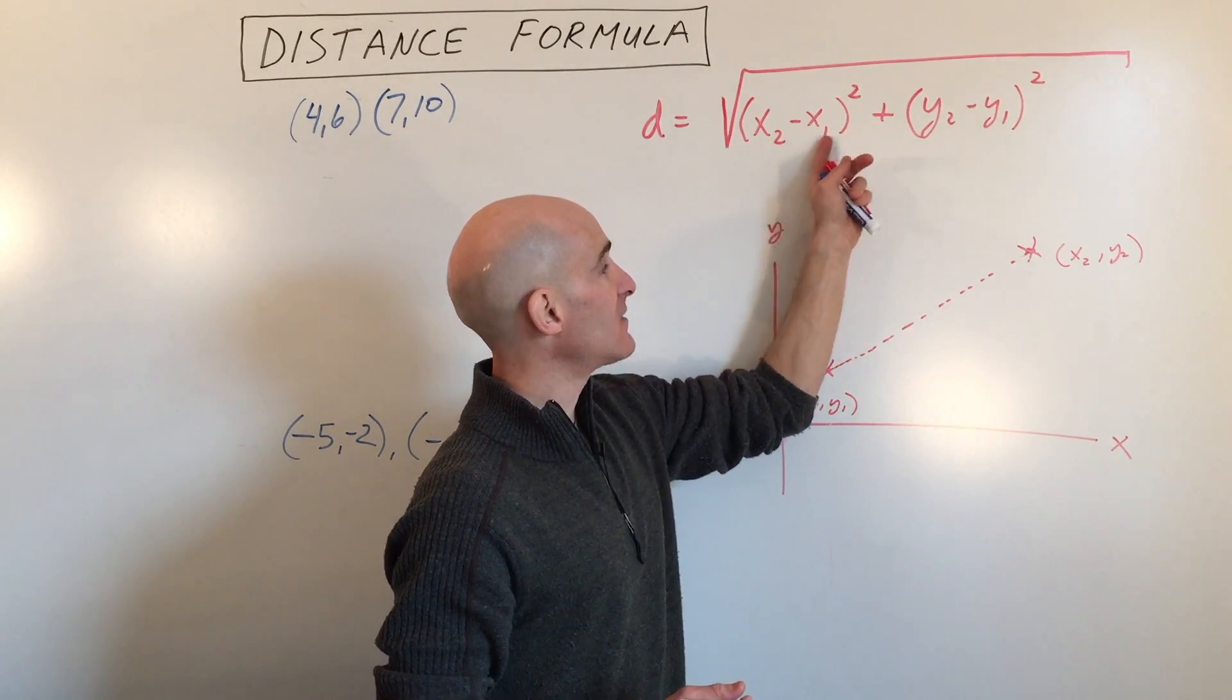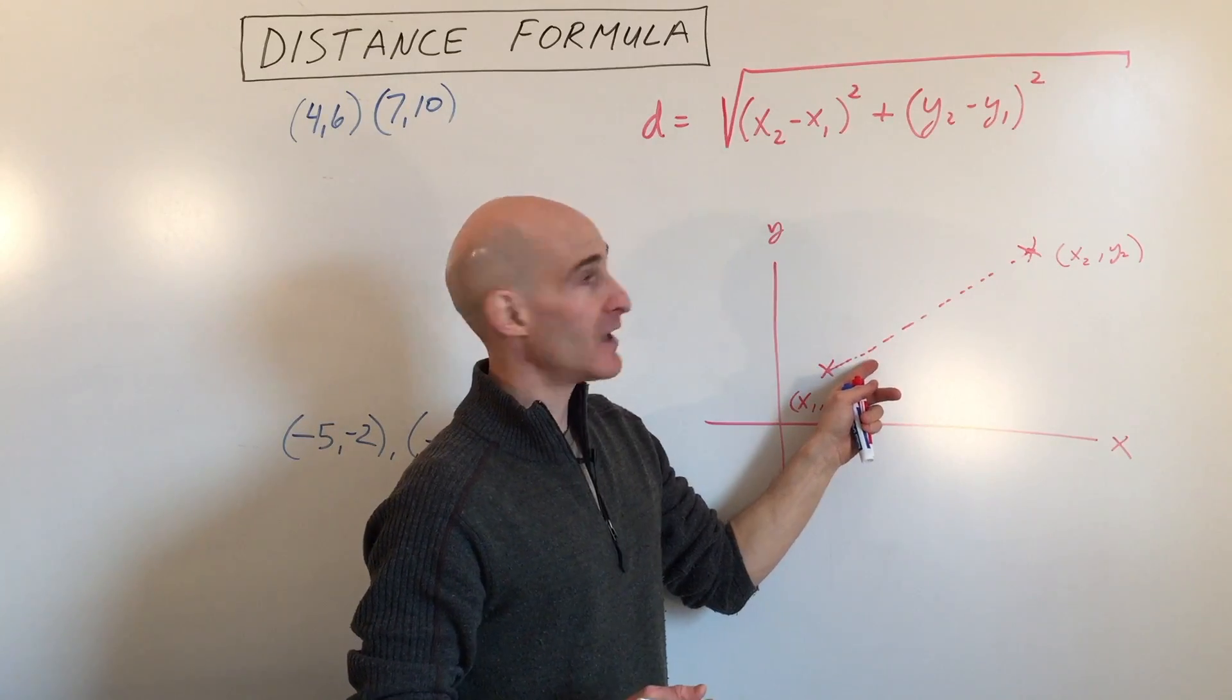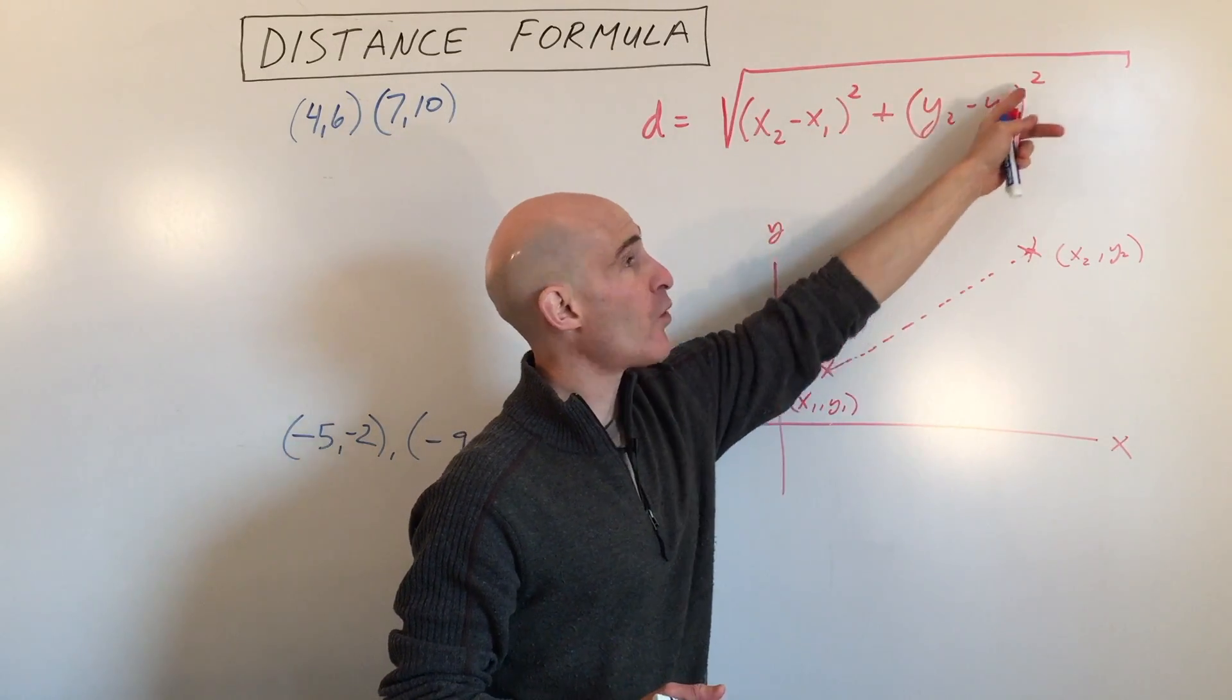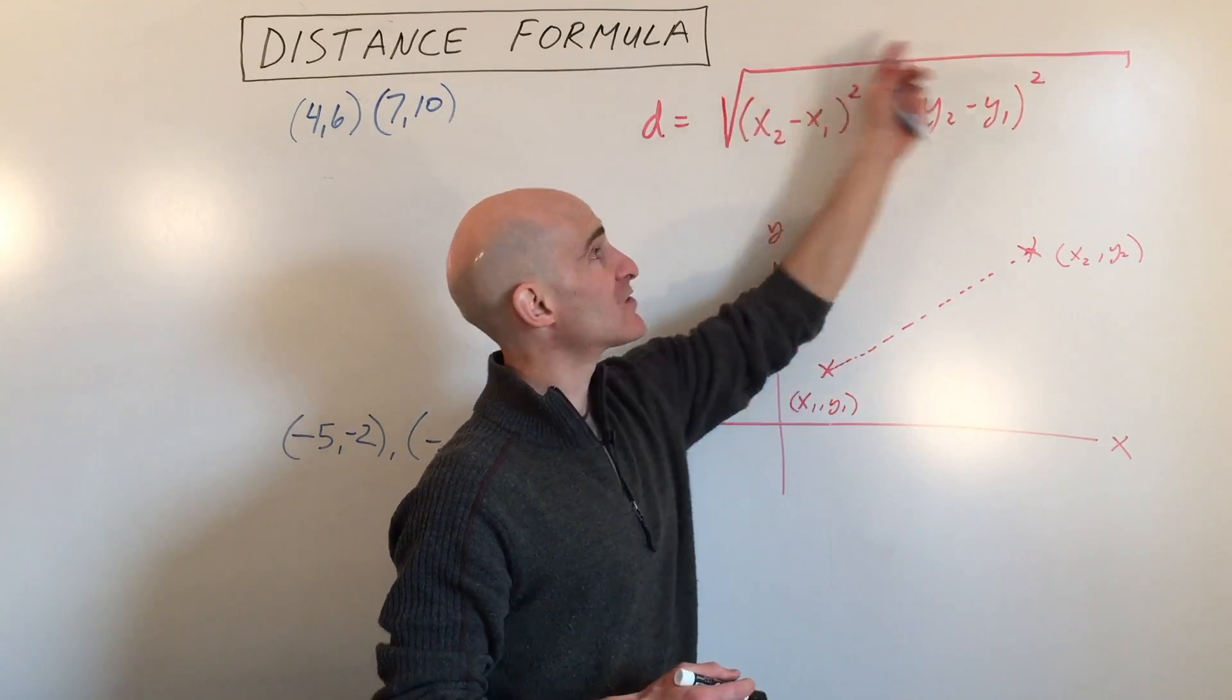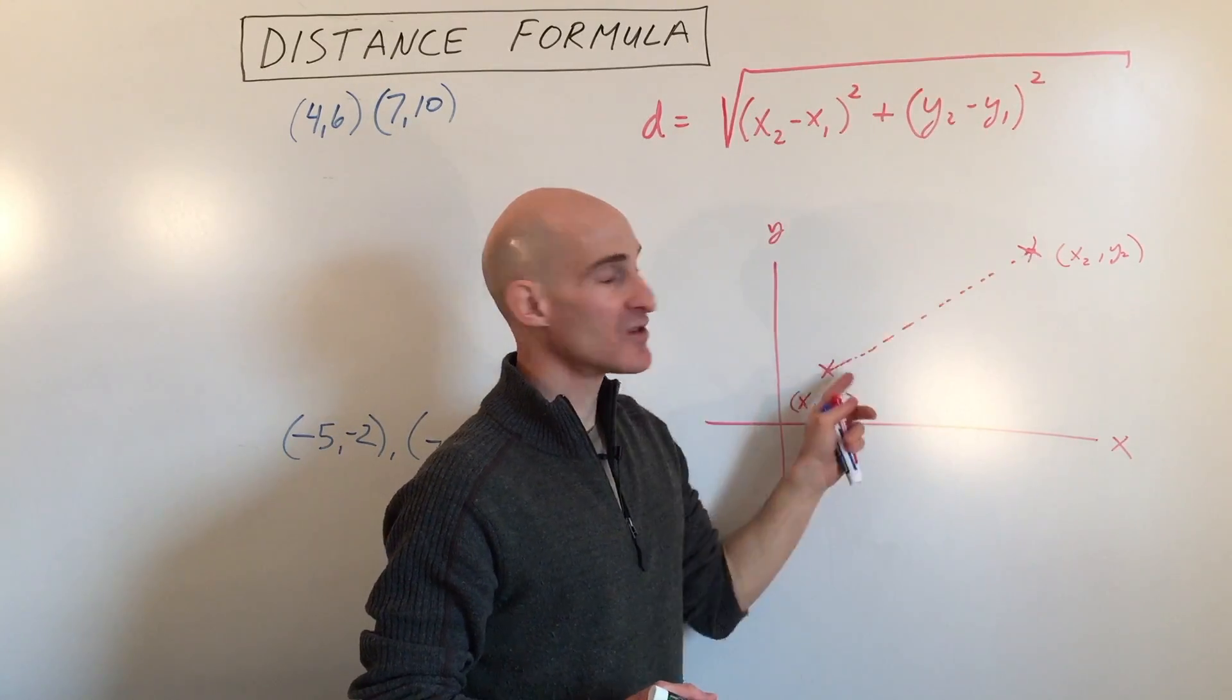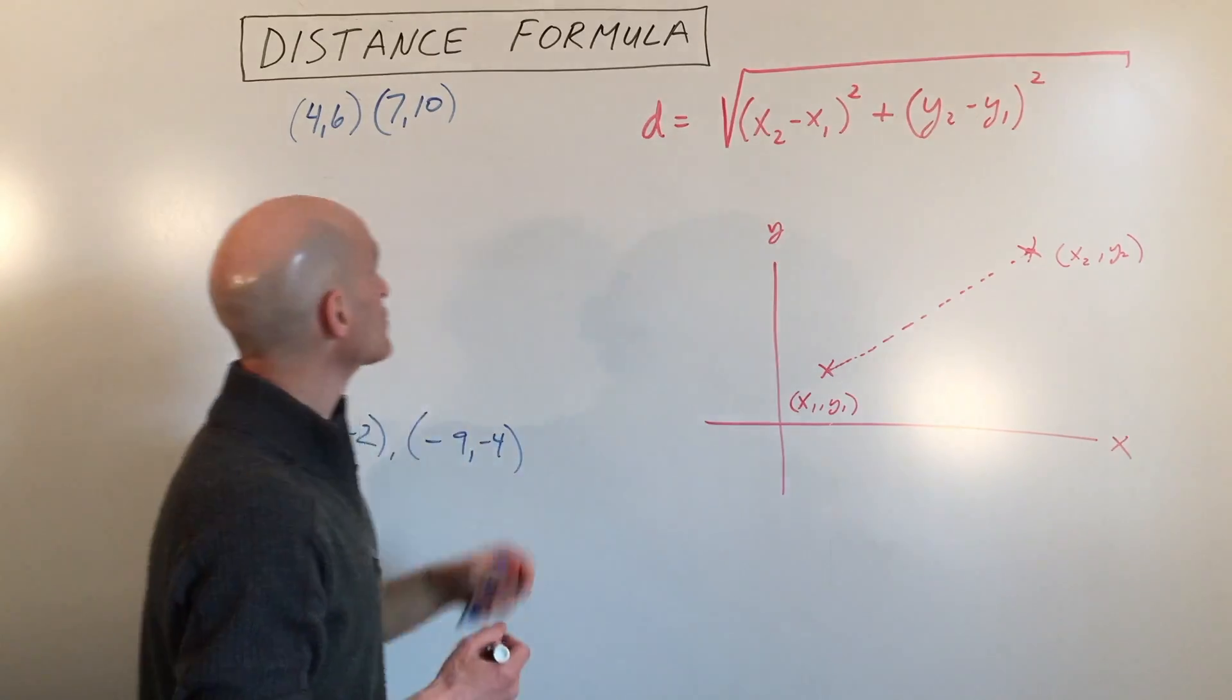So what we're doing is we're subtracting the x-coordinates and squaring, and then we're subtracting the y-coordinates and squaring, and then we add those together, and we take the square root, and that'll give us the distance between the two points. So let's do some examples.